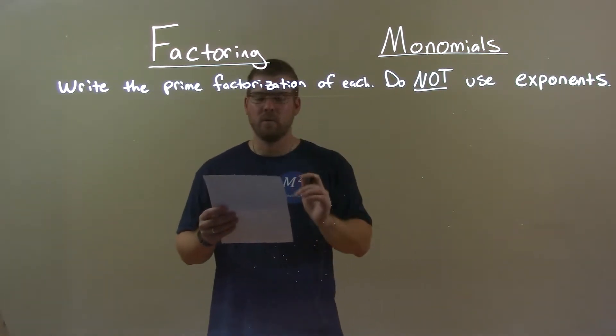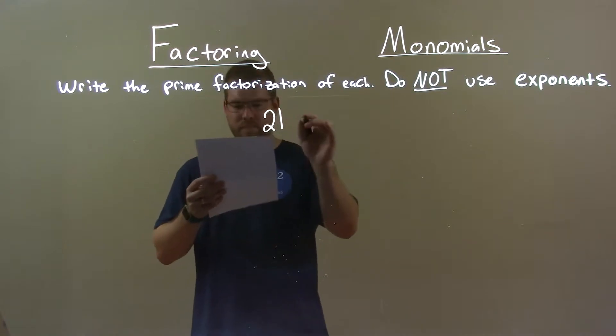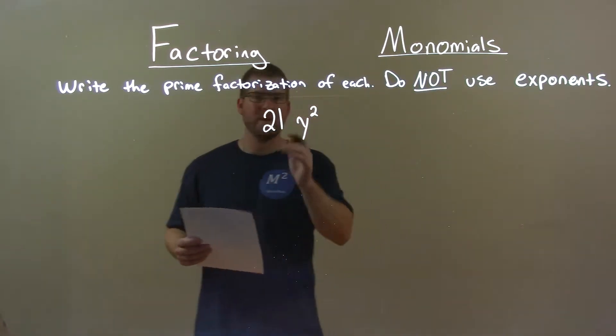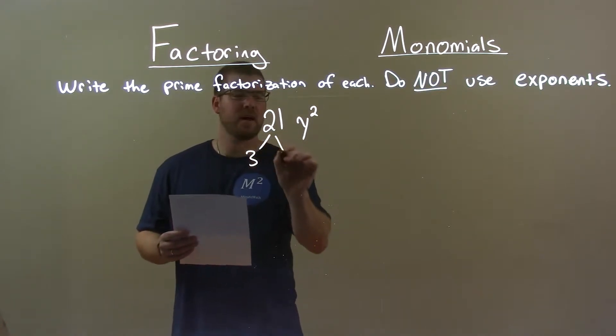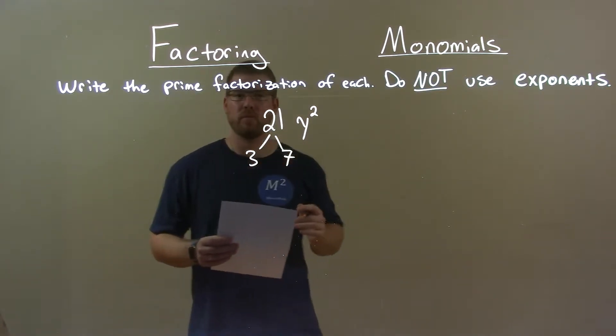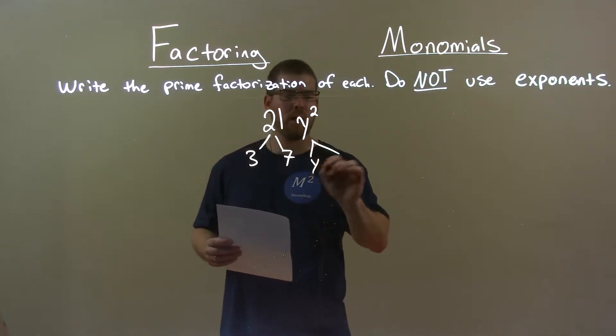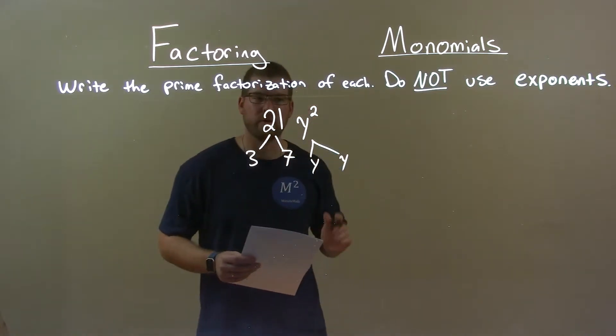So, if I was given this monomial 21y squared, okay? Well, 21 we can break down to be 3 times 7. Both of these are prime, so we're done with that number. y squared is just y times y, right?